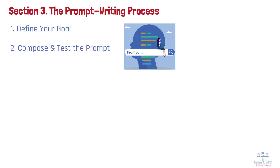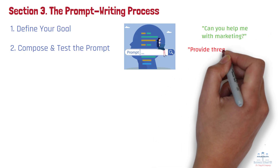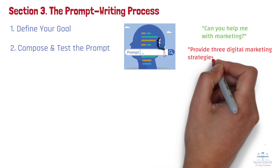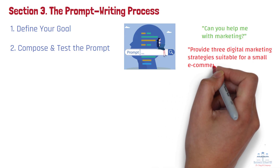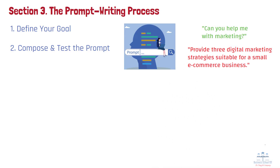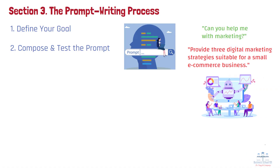For example, instead of asking 'can you help me with marketing,' you might say 'provide three digital marketing strategies suitable for a small e-commerce business.' This prompt specifies the type of marketing and the business context, guiding the AI to deliver a more targeted response.